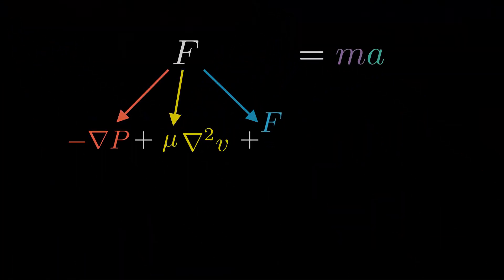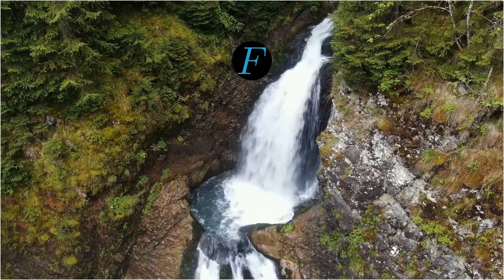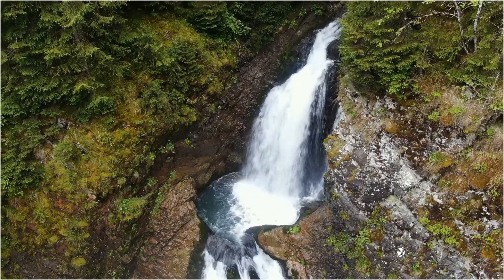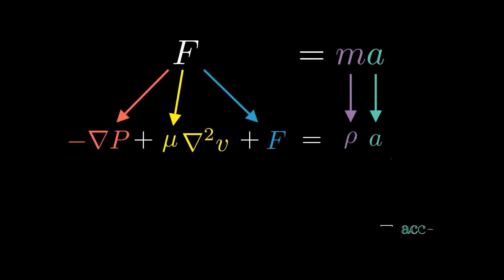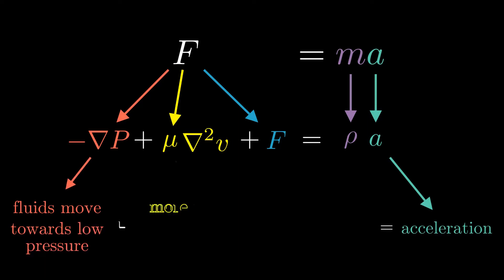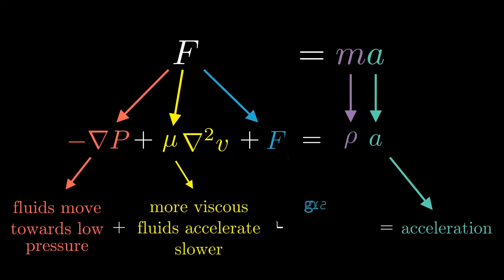Lastly, there are any external forces, most notably gravity. Think of a waterfall — gravity will pull the water down. On the other side of the equation, we have mass times acceleration. Since it's a fluid, we talk about density, which is mass over volume. The acceleration stays as acceleration. So the whole equation reads: the acceleration is determined by the change in pressure, how viscous the fluid is, and the effects of gravity.